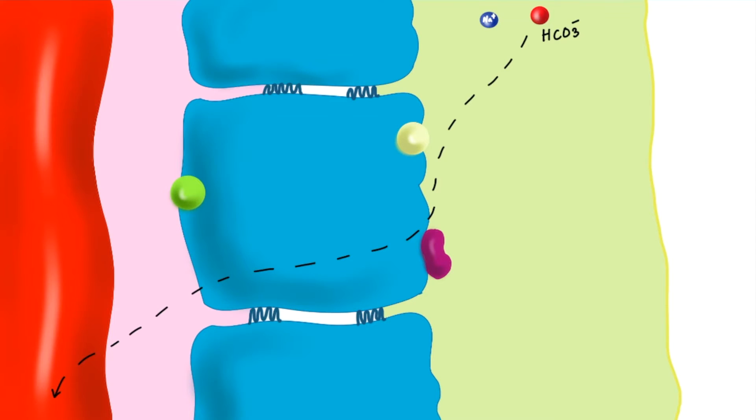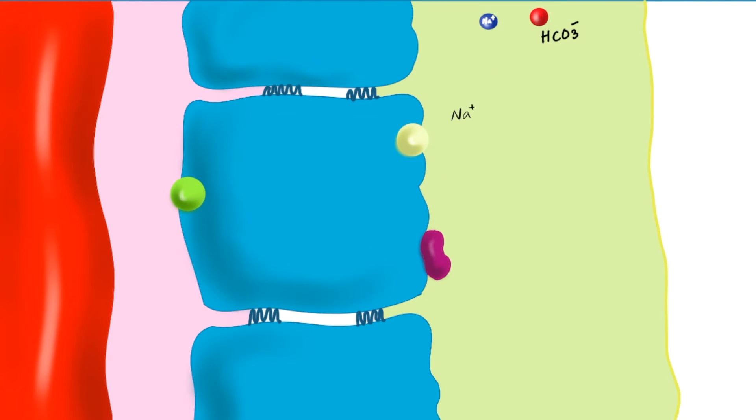This luminal side has a special transporter which takes one sodium molecule into the cell and concurrently throws out one hydrogen ion out of the cell into the lumen. So it transports sodium and hydrogen ion in different directions. Hydrogen ion is also called proton. So the name of the transporter is sodium proton counter-transporter or sodium hydrogen exchanger.